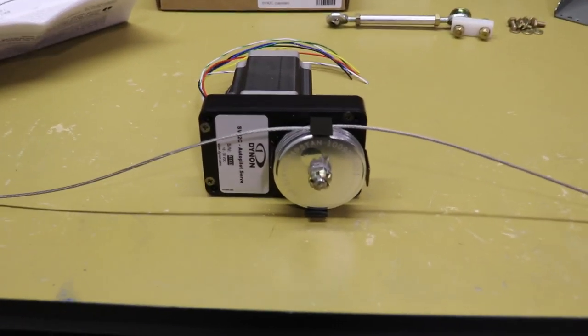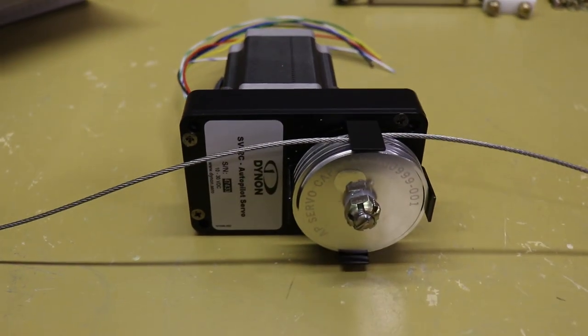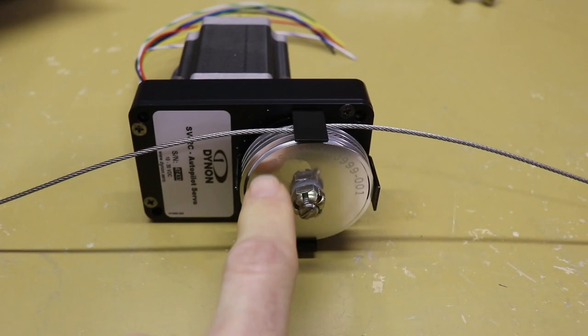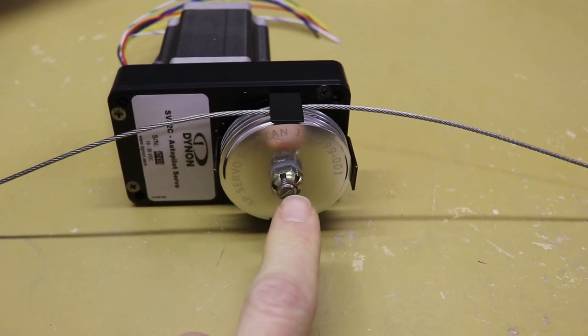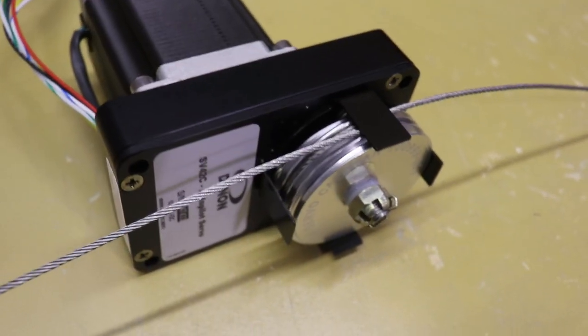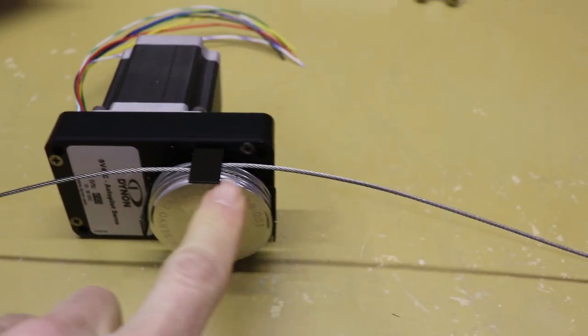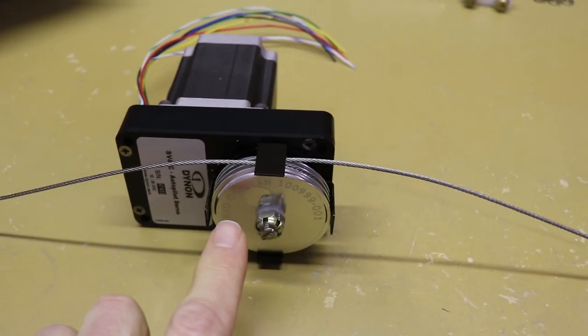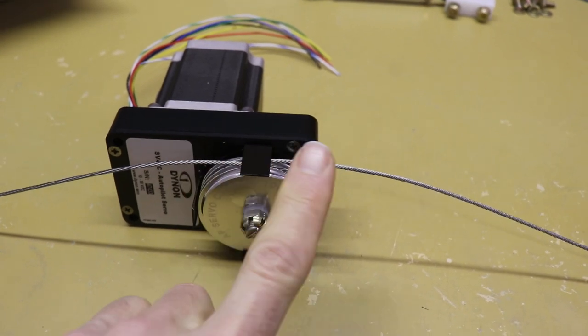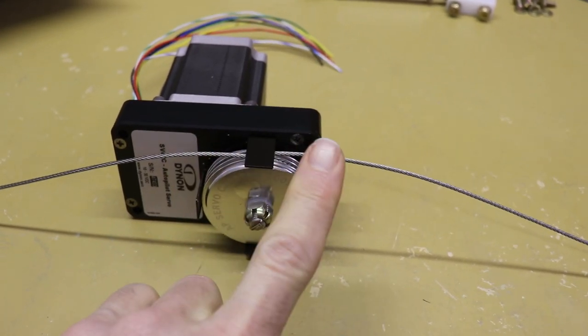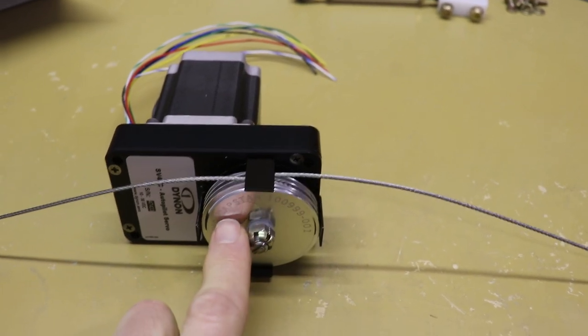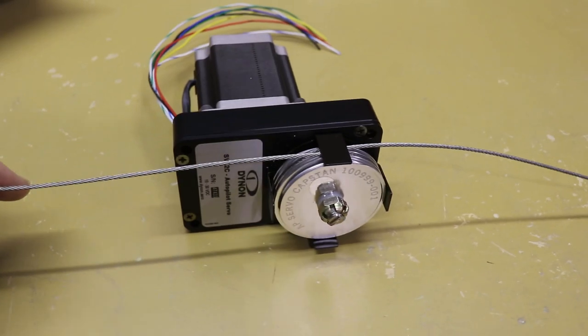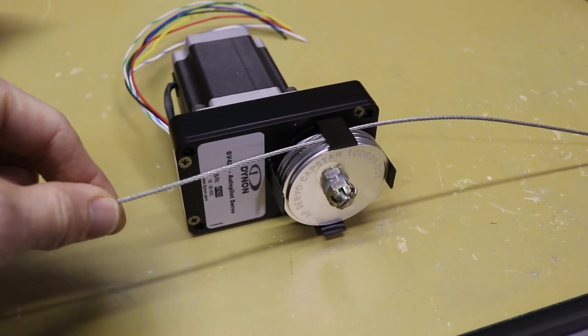So that brings us to this servo here, which you can see looks a little bit different than a regular servo with the arm on it. Actually the servo is exactly the same, it's just this part is different here. They call this a cap stand. And as you can see there's a cable in here, it locks in down here and one end loops around this way, the other end loops around this way. And the advantage to this is instead of just having the 2.6 inches of travel with the servo arm, you now have much greater range of travel because this can keep rotating this drum. And these cables here get attached to the elevator cable.